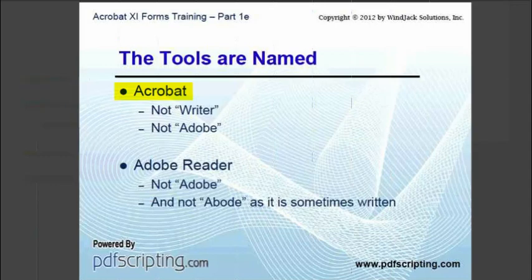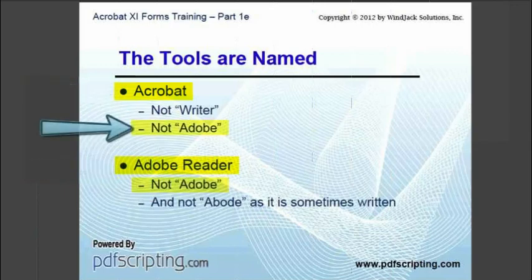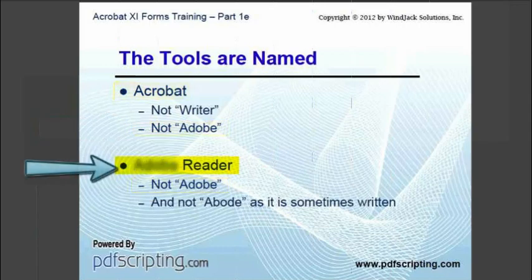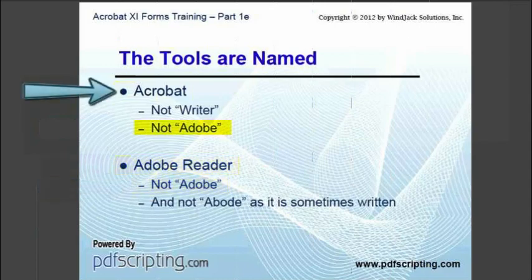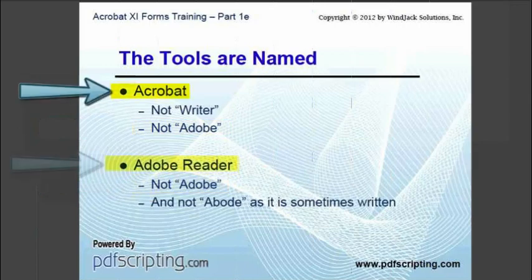The most common thing I hear is both Adobe Reader and Acrobat being referred to as just Adobe. If we want to communicate clearly about a technical issue, it is very important to use the correct names. Adobe Reader can be shortened to Reader when we know we are talking about the Adobe PDF product, but it is never just Adobe by itself, and Acrobat is certainly never called Adobe. The two names are Acrobat and Adobe Reader.